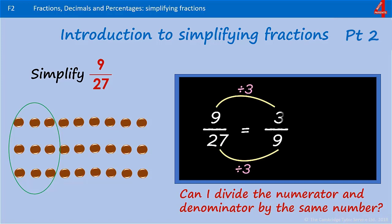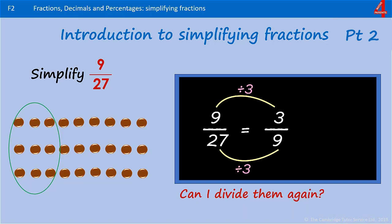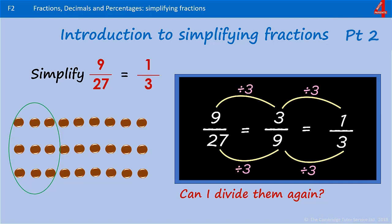9 divided by 3 is 3. Can I divide them again? I can. I can simplify them even further by dividing both by 3. 9 divided by 3 is 3, and 3 divided by 3 is 1. 9 out of 27 is the same as 1 third.